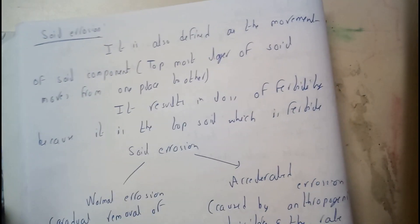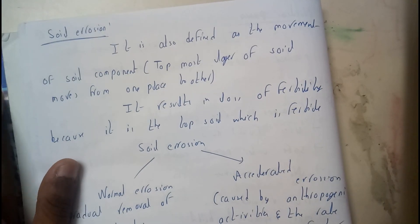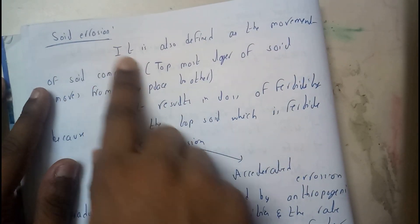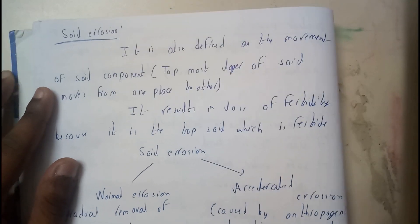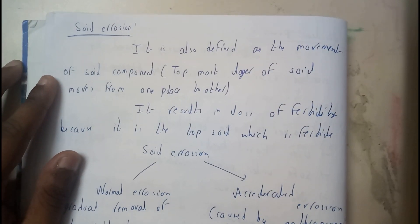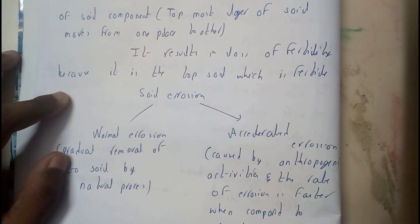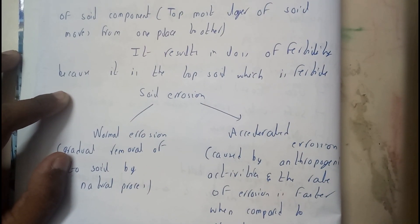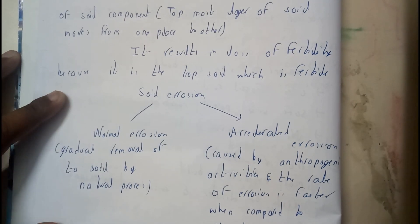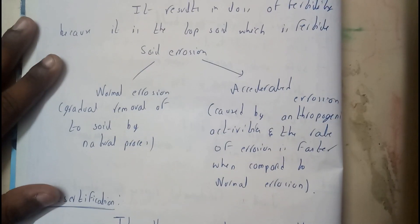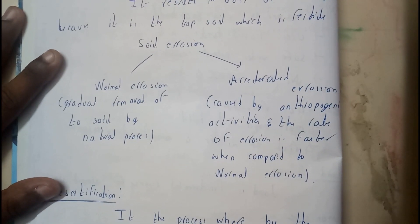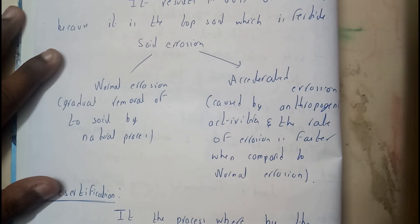Whenever we go through land resources, we should remember soil erosion. Soil erosion is defined as the movement of soil components — the topmost layer of soil moves from one place to another. It refers to the loss of fertility because it is the topsoil which is fertile. Around 2.5 centimeters is the most fertile surface of the land.